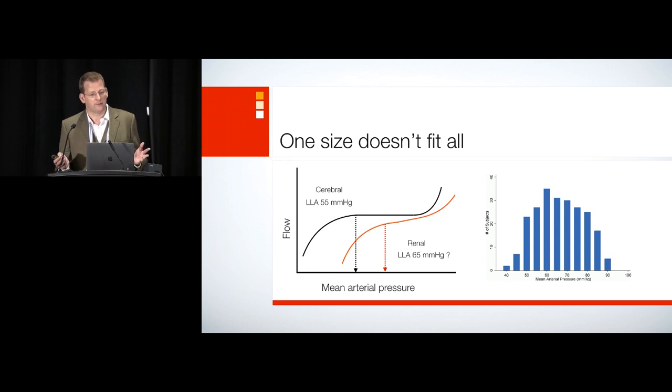So how do we know then what perfusion the brain, kidneys, and guts need? We don't. We don't have access to cerebral oximetry for all our patients, and we don't have methods to measure perfusion in the kidney or the gut that currently have clinical utility. There are experimental versions, mostly for research, but they haven't translated into clinical practice.